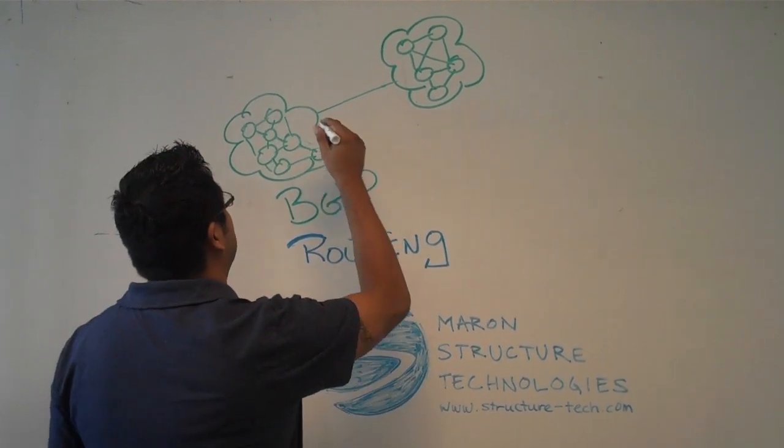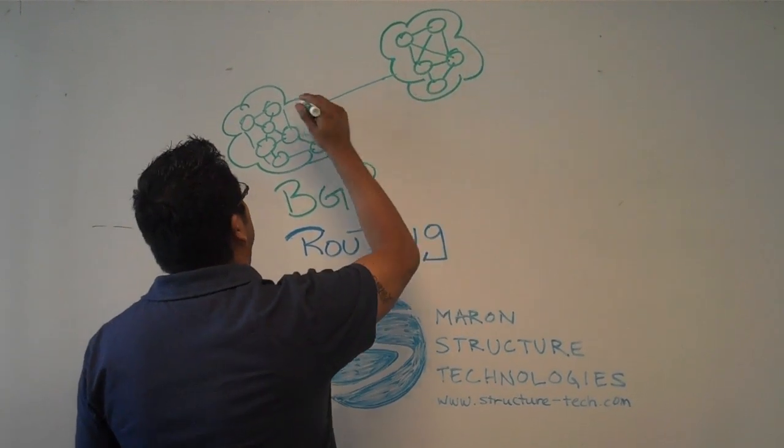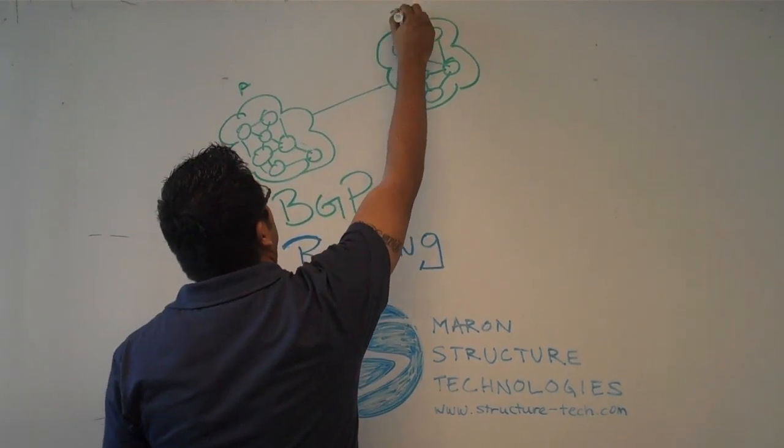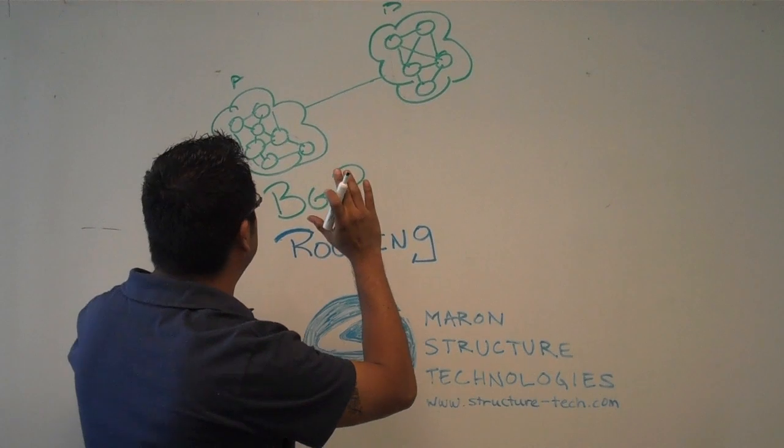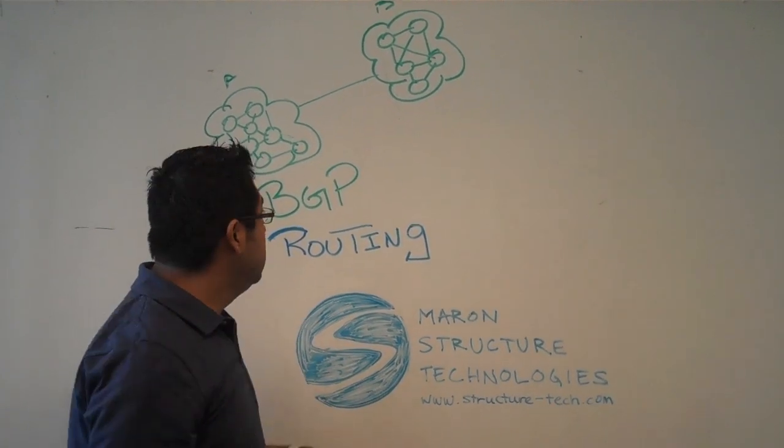In essence, BGP allows multiple routers—we'll just say here A and B, big stacks, the giant clouds—to communicate to each other by the allowance of transference of routes.